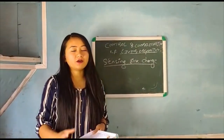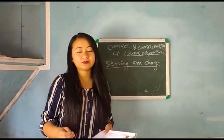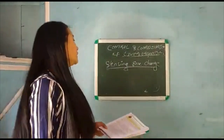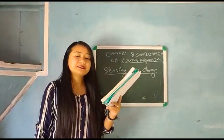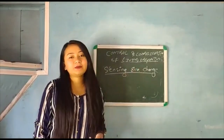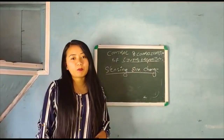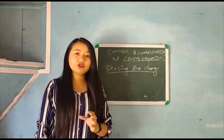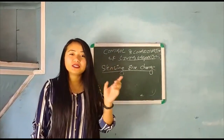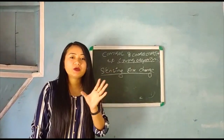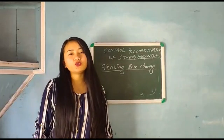In the environment, there are many changes. Plants sense light using photosensitive compounds. Two components are photosensitive compounds, which are used to sense light.